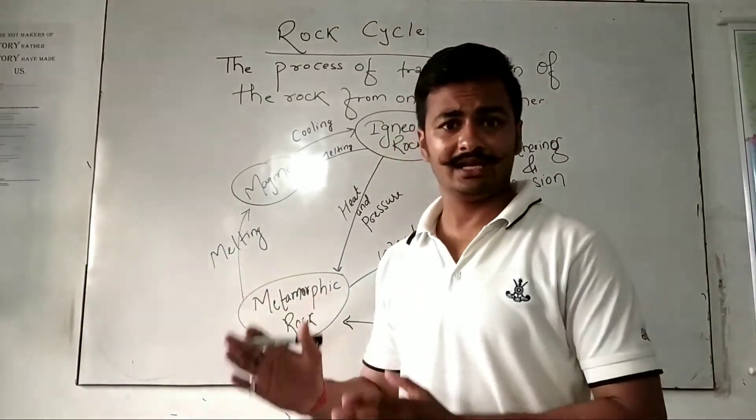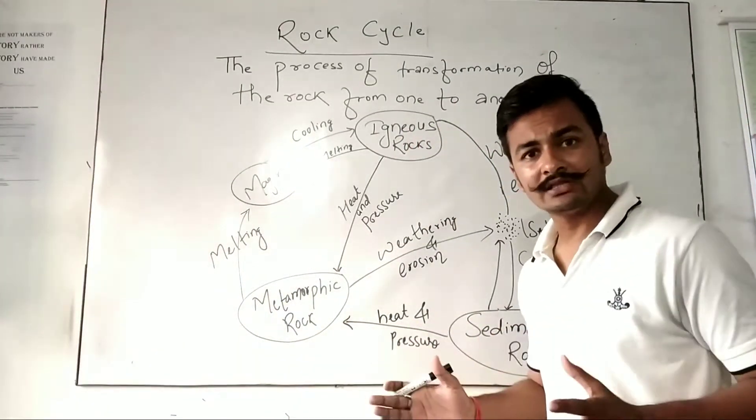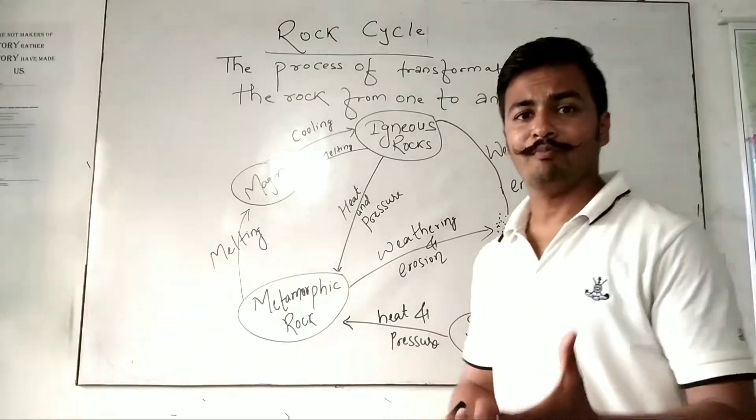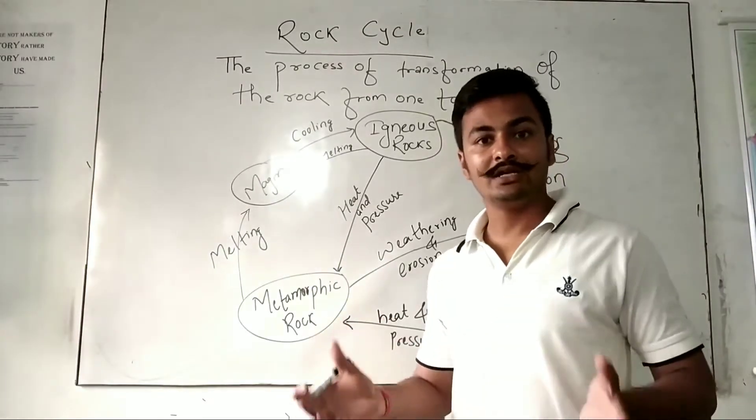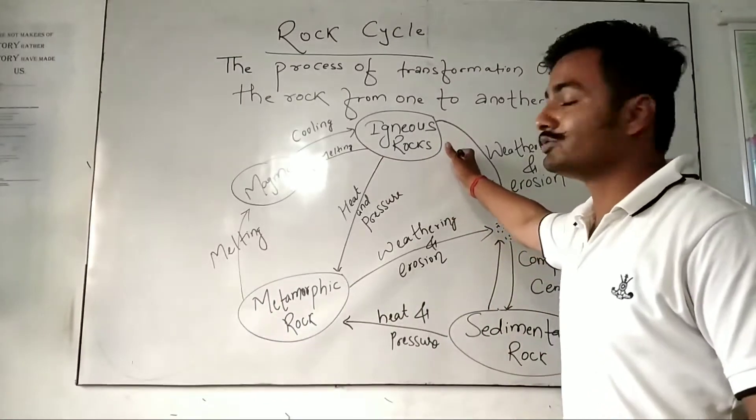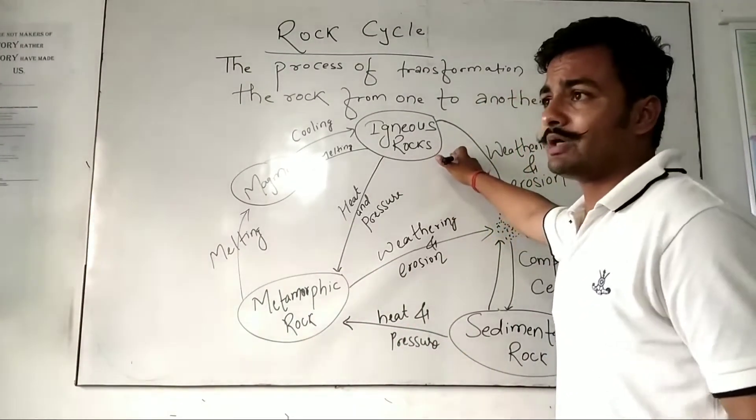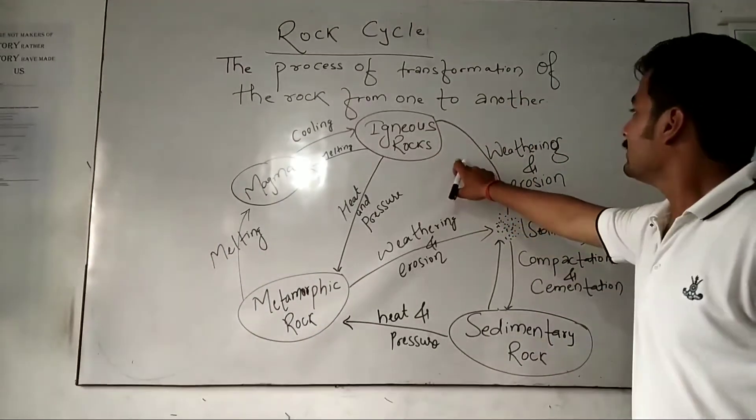The rock is known as igneous rock. What happens then? When due to heat and temperature, water, effect of rainfall, wind—this weathering—these rocks break down.